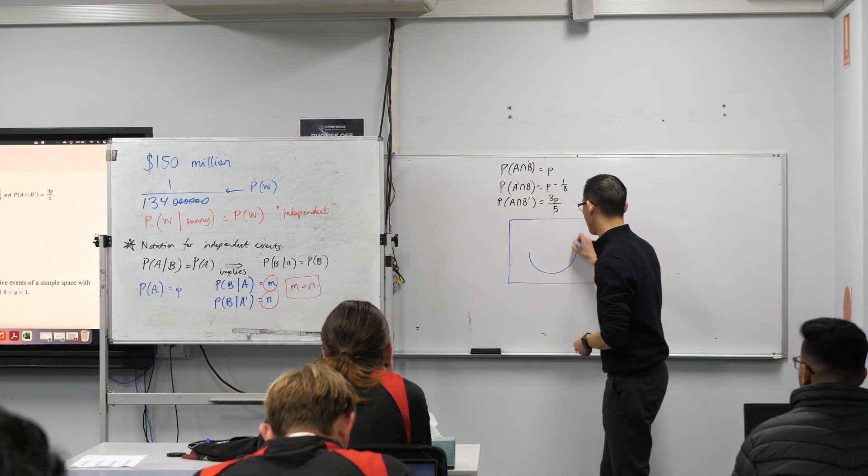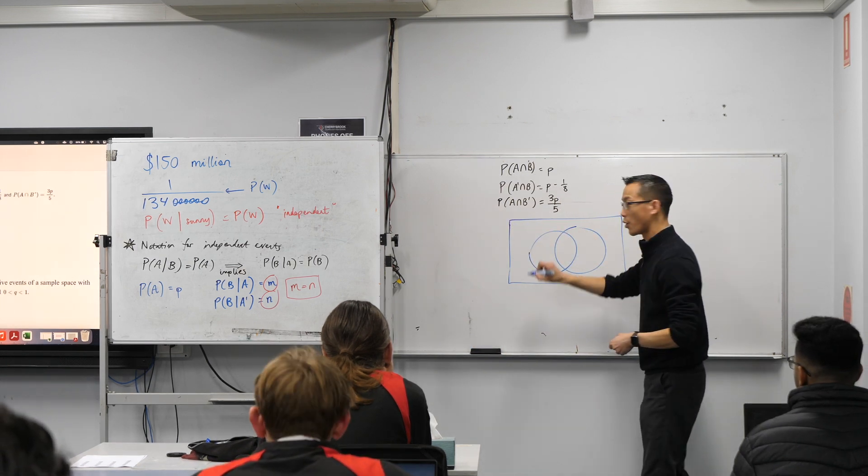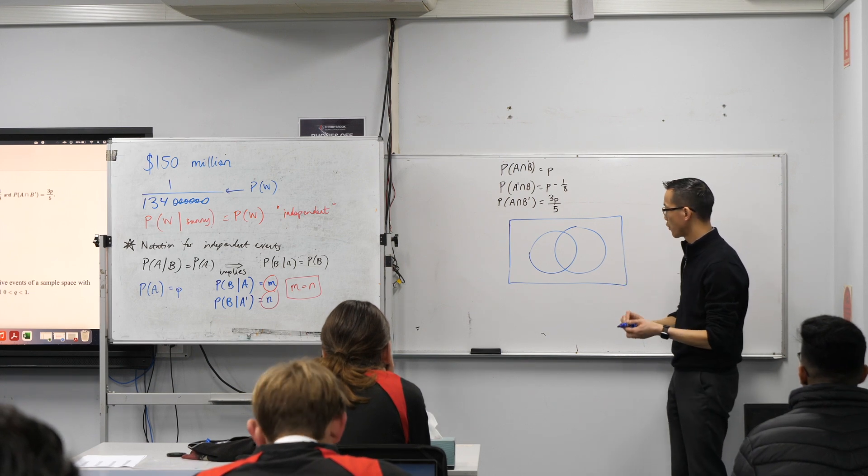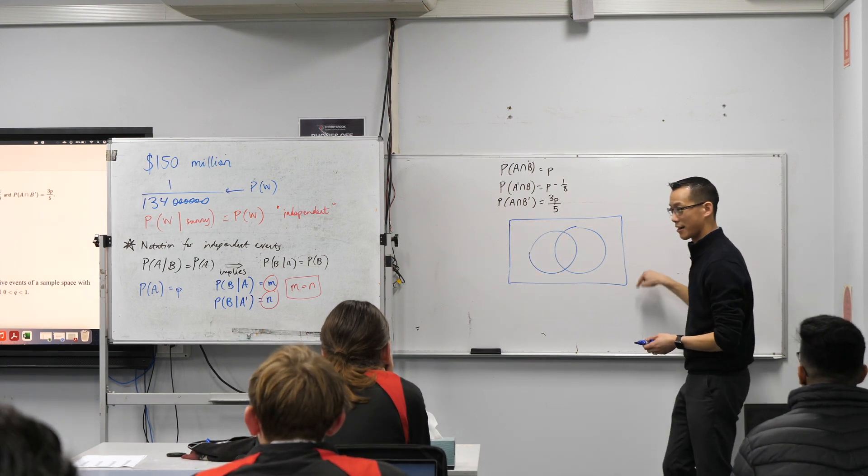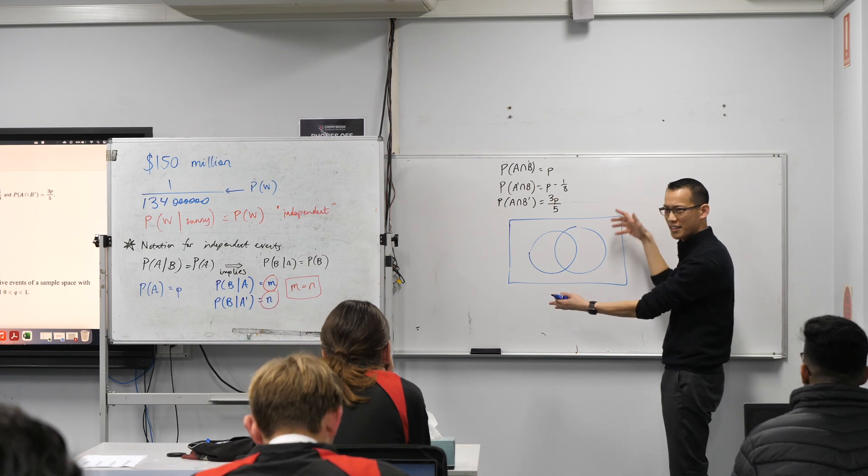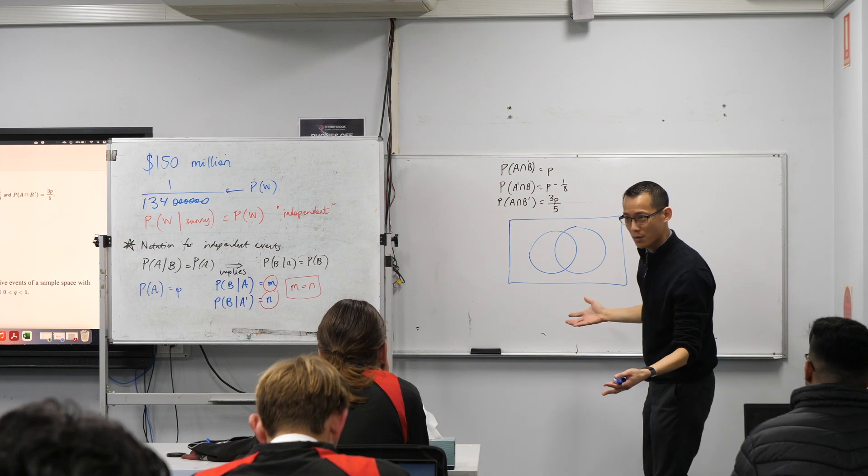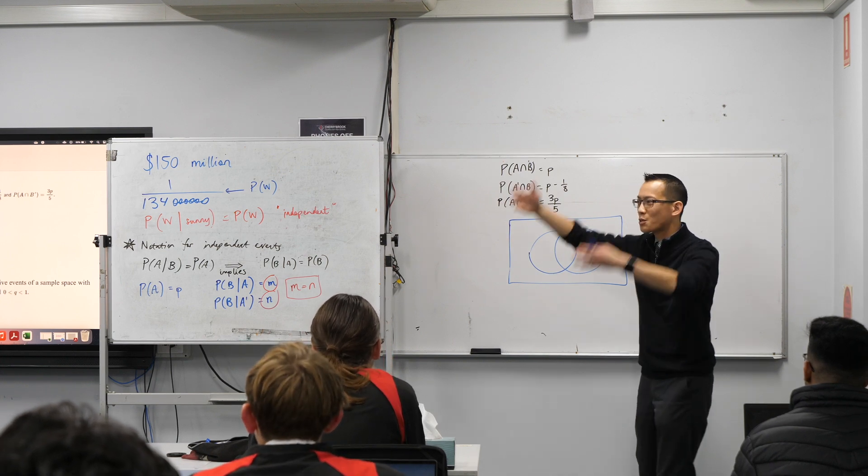I will say though, as I wandered around, most of you forgot when you're constructing a Venn diagram, you do need a box around it. That's not just to make things neat. Why do we need a box around it? Because there's a whole sample space, right?